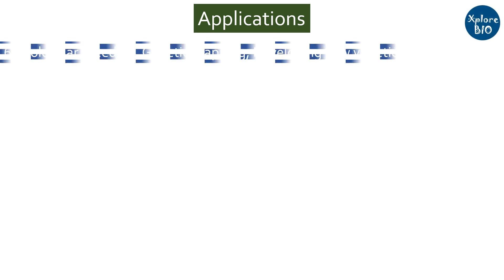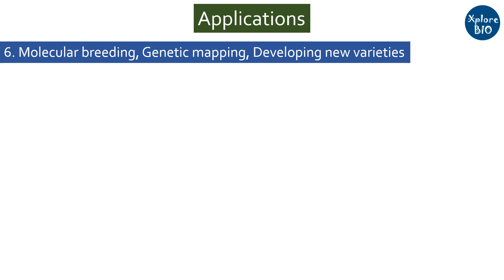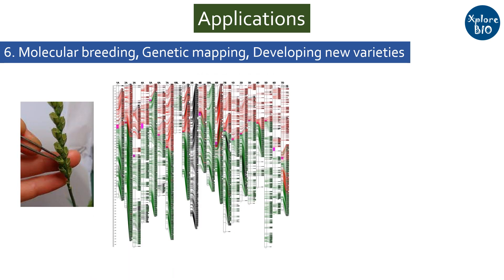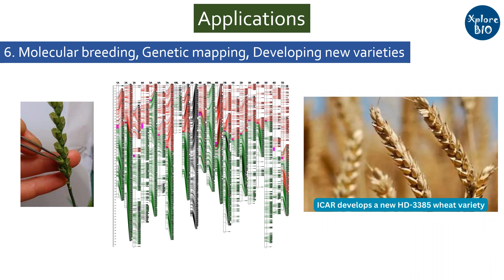In agriculture, DNA Fingerprinting is used in developing new varieties of plants with desirable traits through molecular breeding, genetic mapping, and other studies. Overall, genetic fingerprinting is a powerful tool with numerous applications in various fields, and its importance continues to grow as technology advances and new applications are discovered.